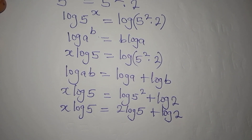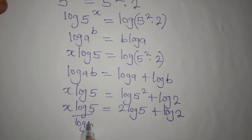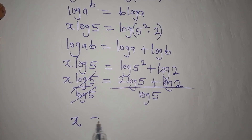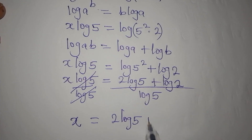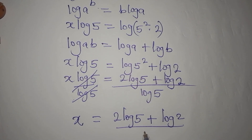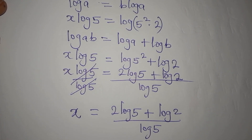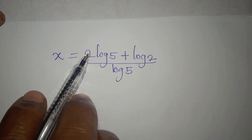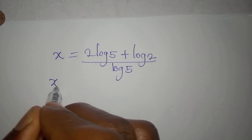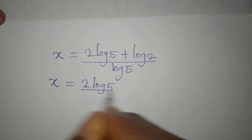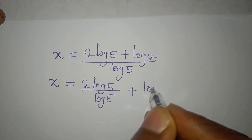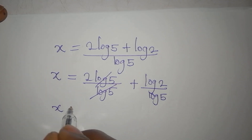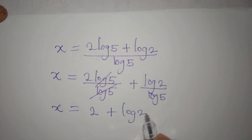To get the value of x, we remove log 5 from the left by dividing both sides by log 5. So x equals 2 log 5 plus log 2, all divided by log 5. This log 5 in the denominator applies to both numerator terms, so we split and get x equals 2 log 5 over log 5 plus log 2 over log 5, which simplifies to x equals 2 plus log 2 over log 5.